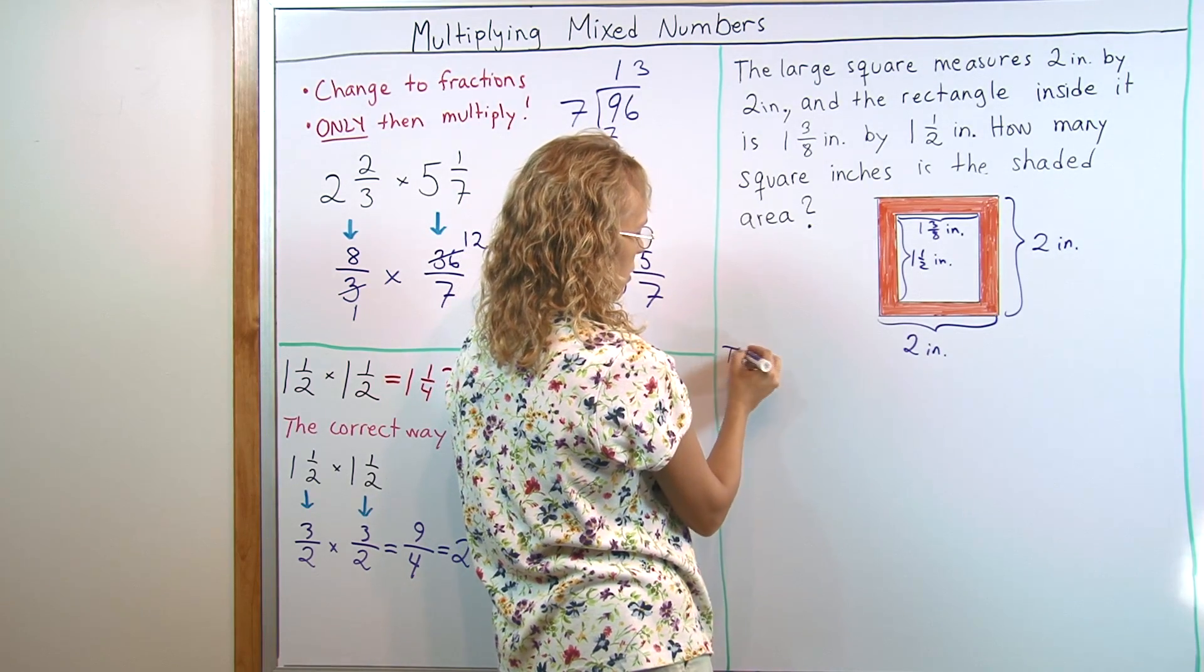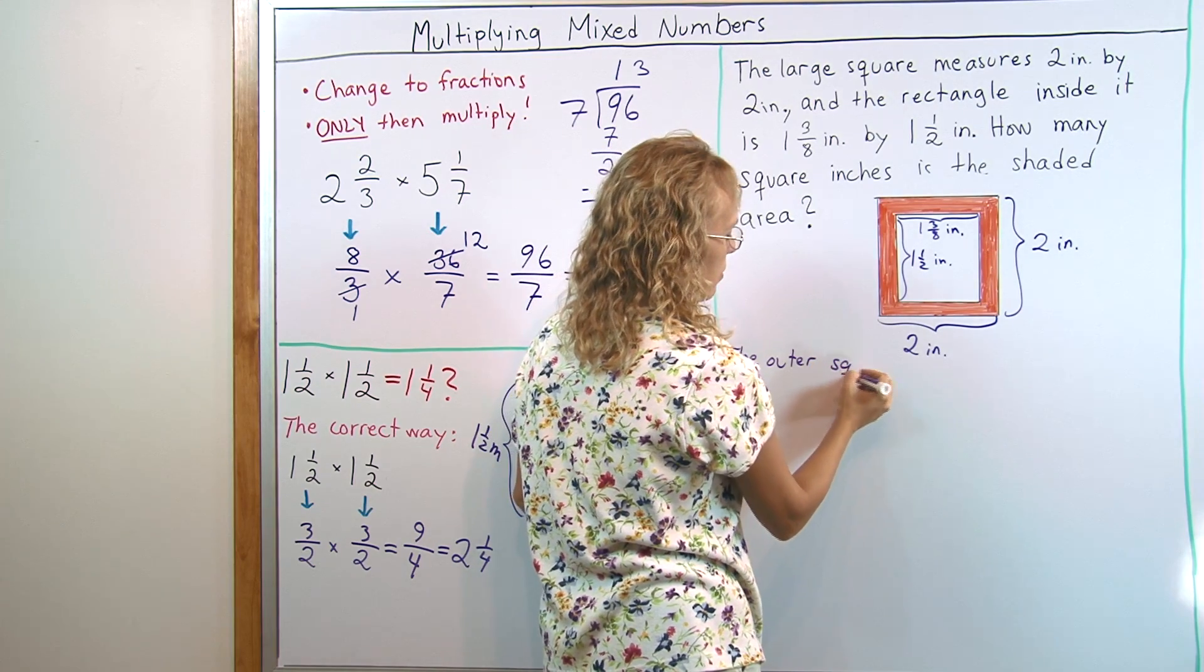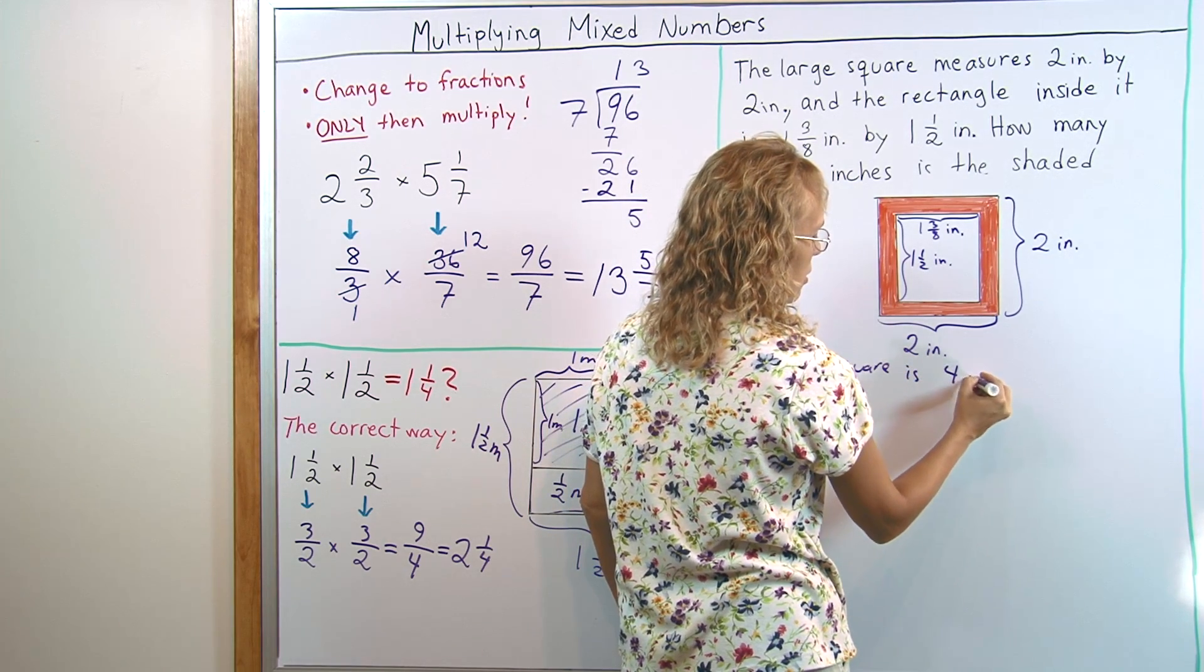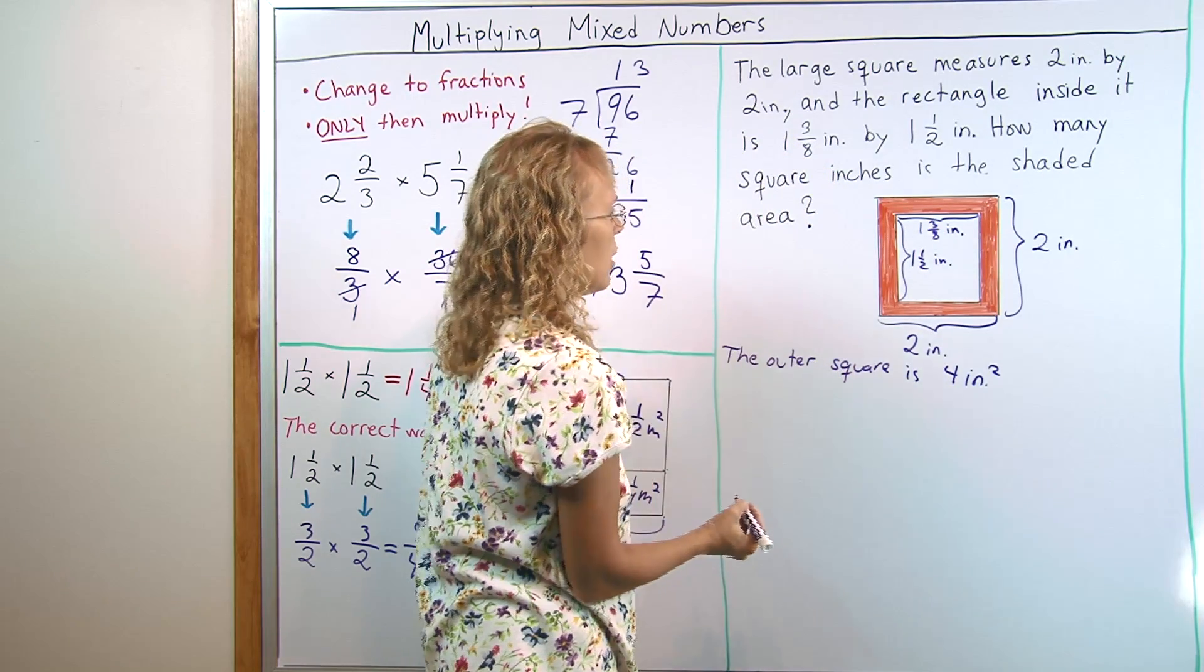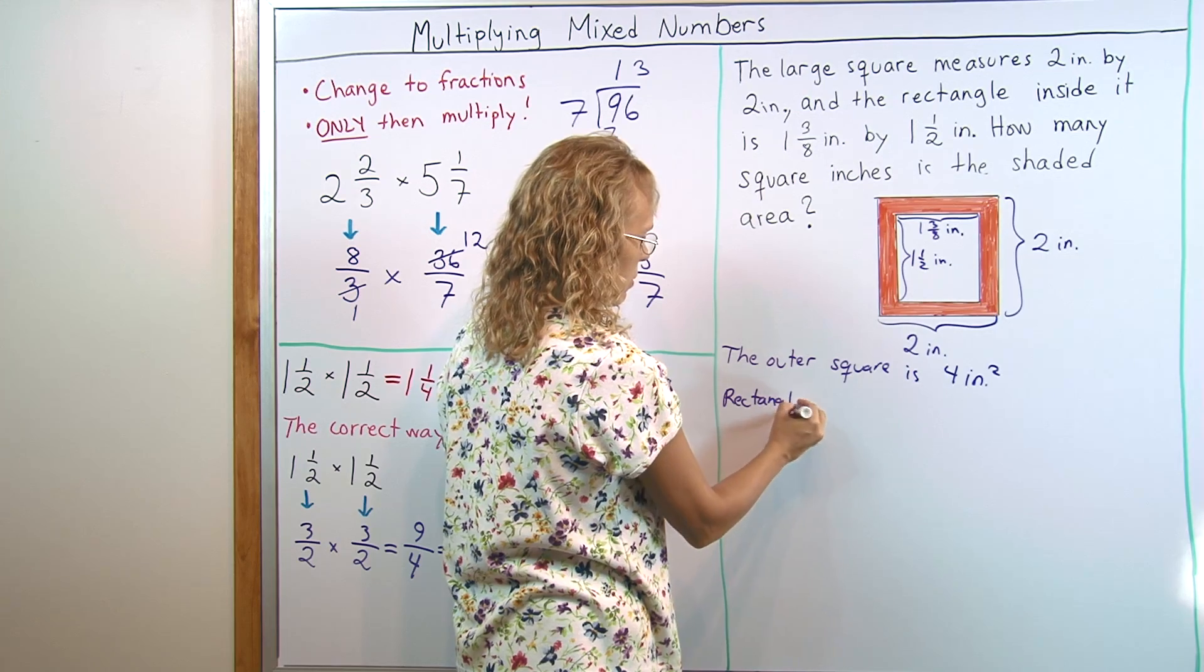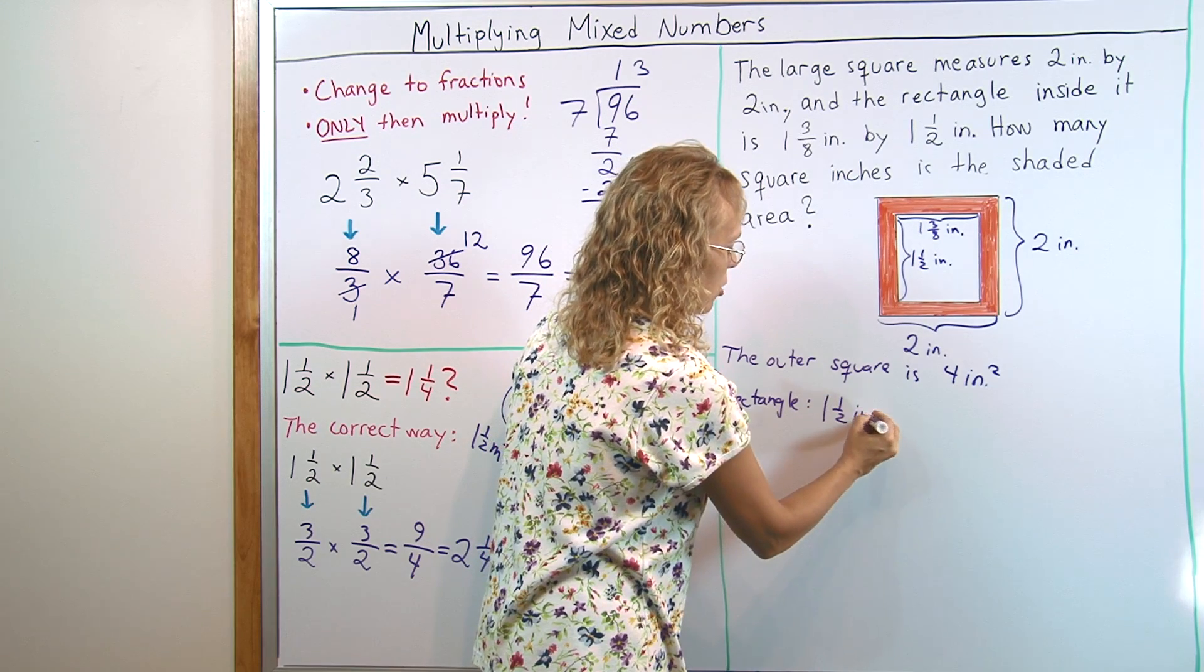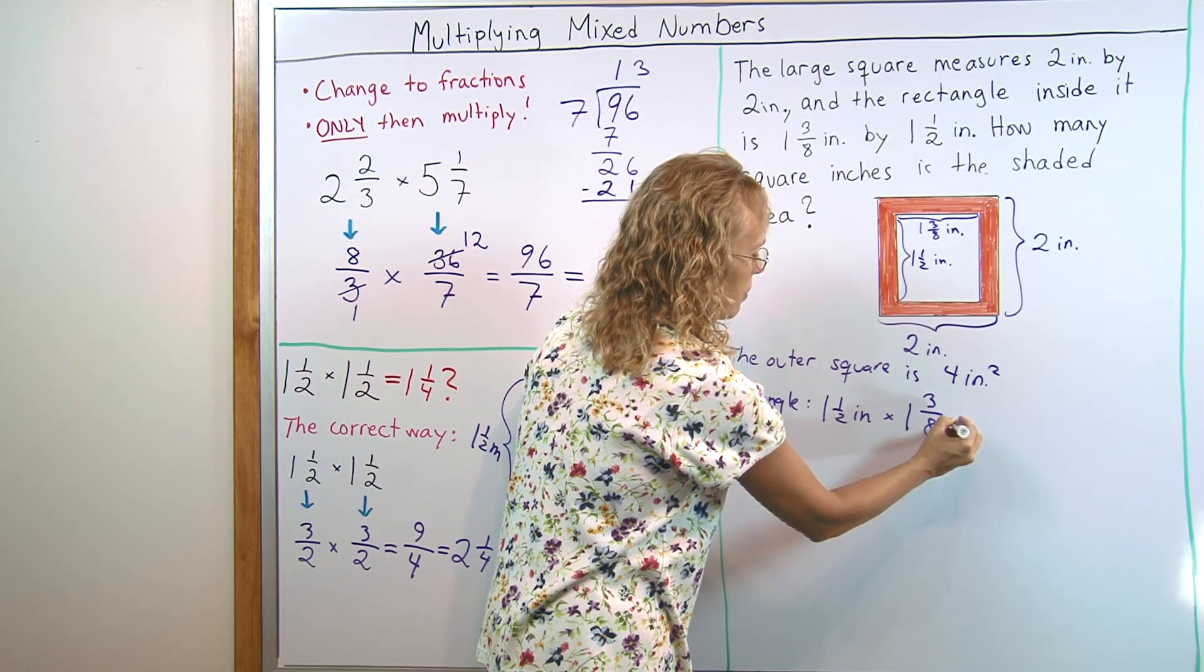The outer square has the area of 2 inches times 2 inches. So, that is pretty easy, 4 square inches. The rectangle, its area we will find simply by multiplying the mixed numbers, right? 1 and 1 half inches times 1 and 3 eighths inches.